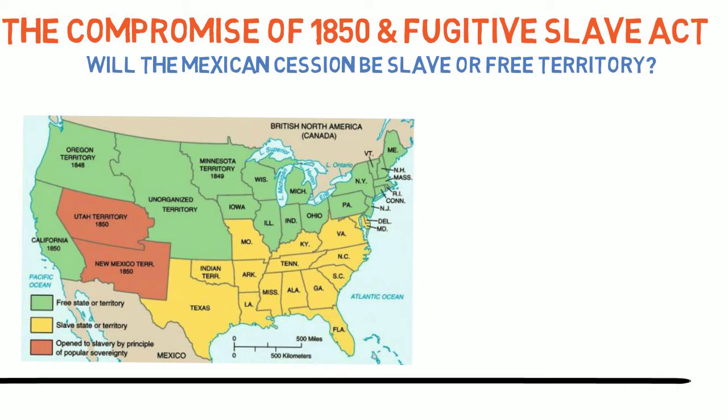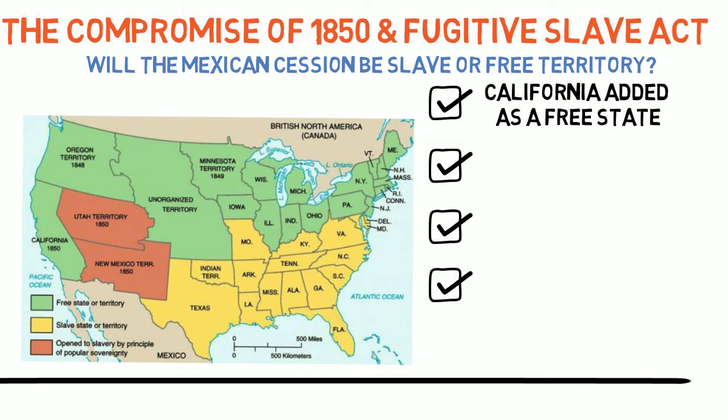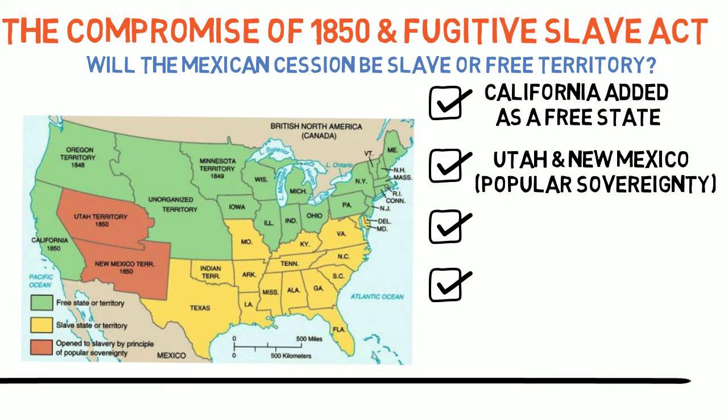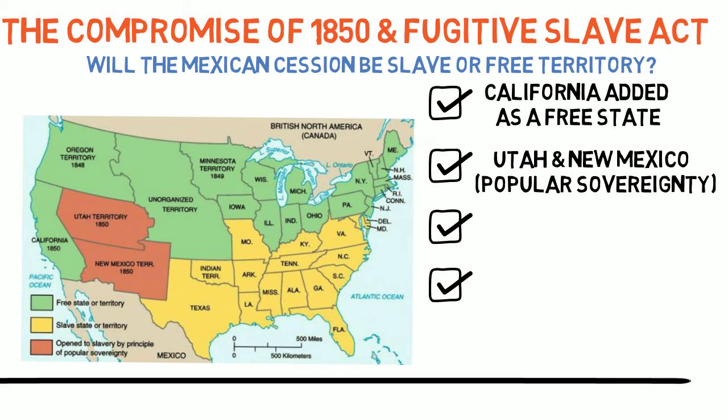So once again, a compromise was proposed, and again it was Henry Clay, now a senator, who came up with it. There were four main components of the Compromise of 1850. First, California was added as a free state. Secondly, the slave question would be settled by popular sovereignty in the territories of Utah and New Mexico — those territories would hold a public referendum and let the people there vote, which effectively opened those territories to slavery. Thirdly, the slave trade, but not slavery itself, would be banned in the nation's capital.